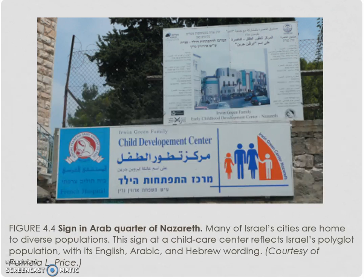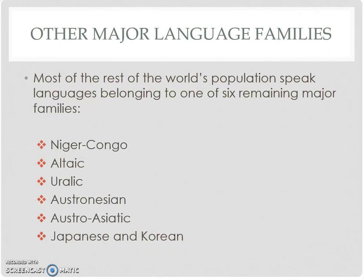For example, Zion, Jerusalem, and Nazareth have several different languages spoken there — a lot of that having to do with being the Holy Land and multiple religions. Other major language families include Altaic, Japanese and Korean, Austroasiatic, Uralic, and Niger-Congo.